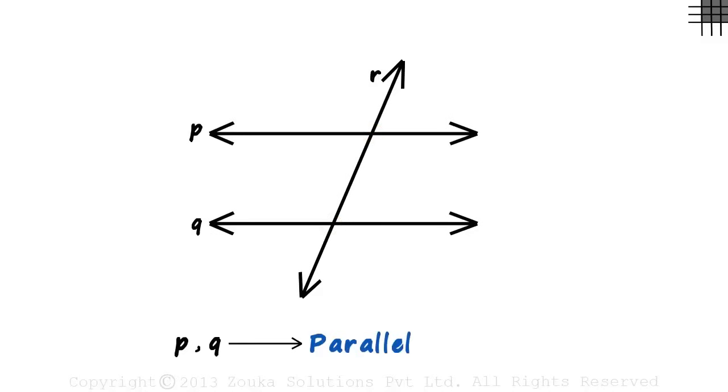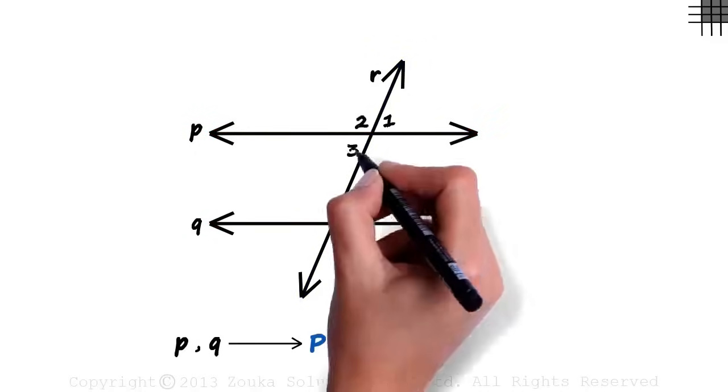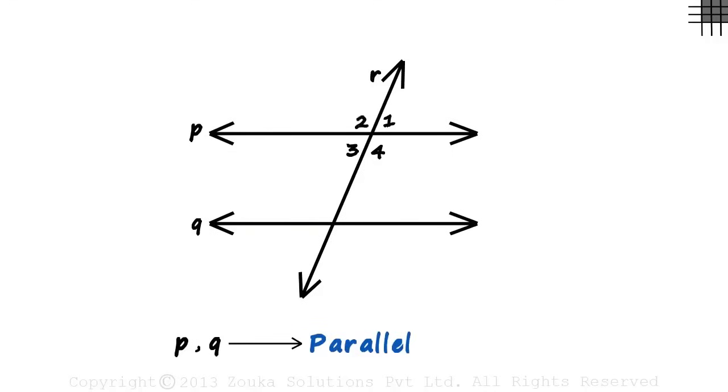In this video, we will try to understand the different types of angles formed by the transversal with two parallel lines. The transversal forms four angles with line P: angles 1, 2, 3, and 4, and four angles with line Q: angles 5, 6, 7, and 8.